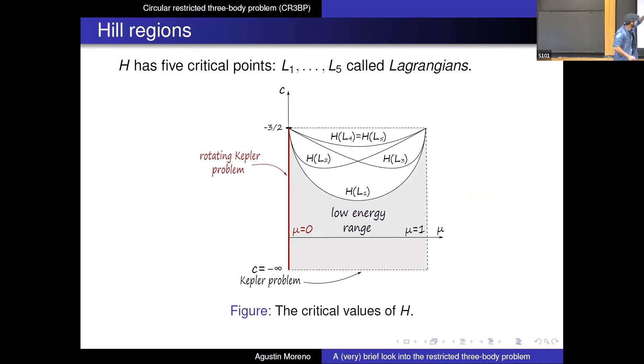So in this picture, I'm graphing the values of the energy. So for example, we have H of L1, which is the lowest critical value. Then you have L2, L3, and so on. There's some symmetry in the picture, according to the miracles one half axis. So the core central axis is a mass ratio, vertical axis is the Jacobi constant.